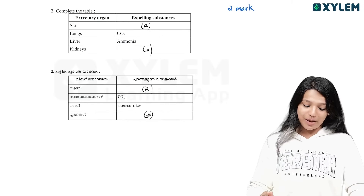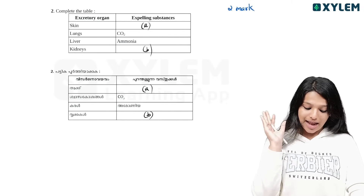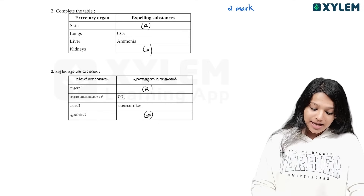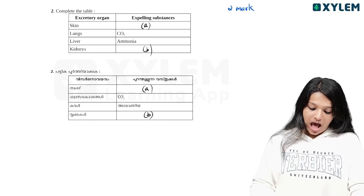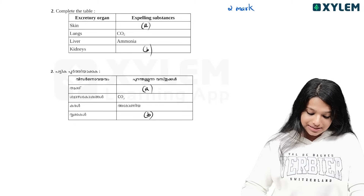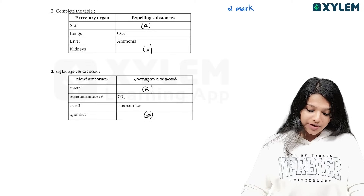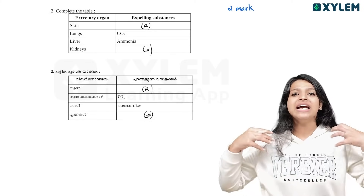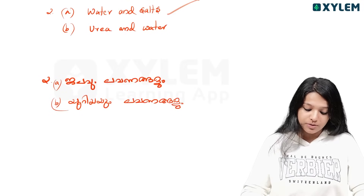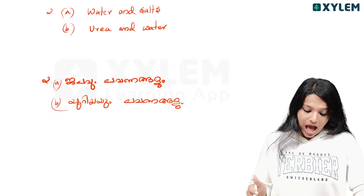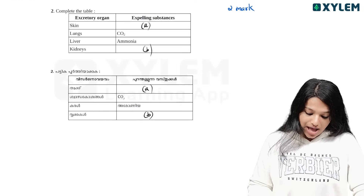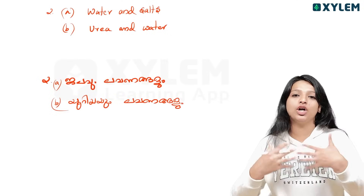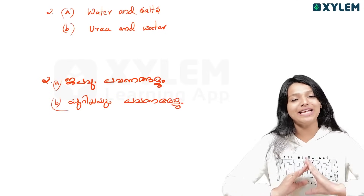Now let's talk about the next question: complete the table. We have the excretory organism and excretory substance. What is the skin? What is the kidney? What is the liver? What is ammonia? The skin involves the sweating process and excretes water and salt. The kidney excretes urine and water. The table is now complete.